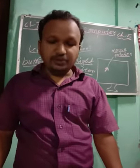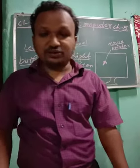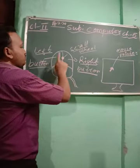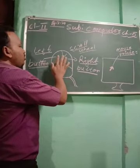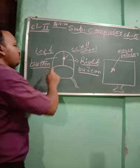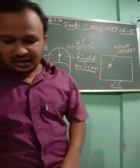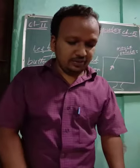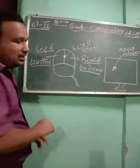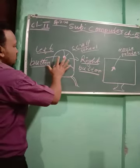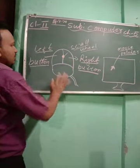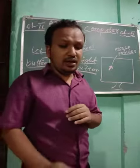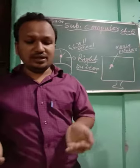We have learned about single click and double click. Single click means pressing the left mouse button once — when you press once on the left side of your mouse it is called a single click. Double click means clicking the left mouse button twice quickly.